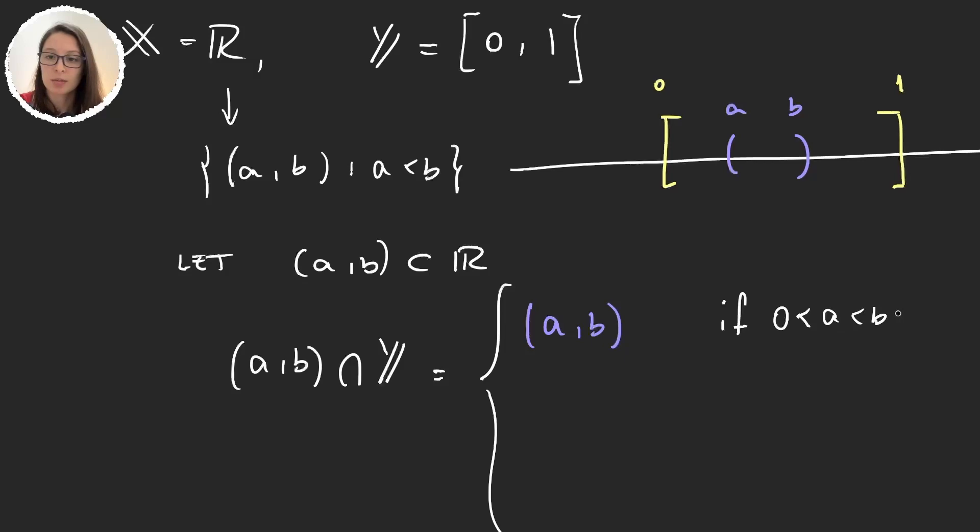So, 0 less than a less than b less than 1. What would happen now if our interval was like this? If a was smaller than 0 but b between 0 and 1. Well, in this case, the intersection of this interval with the [0,1] would be giving us the [0,b). So, this happens if 0 is less than b, less than 1, and obviously a smaller than 0. We could also be in a situation like this. And now the intersection would be the set (a,1].